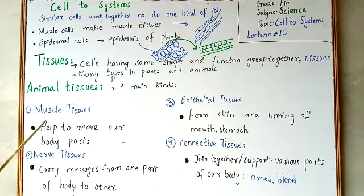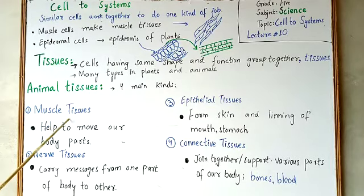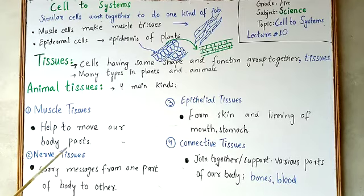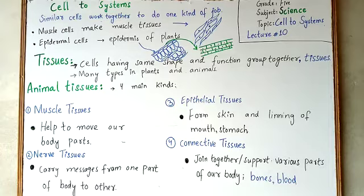Muscle cells combine together to form muscle tissues. Muscle tissues help to move our body parts. These muscle tissues are attached to our bones and help them to move our body parts, like when we want to raise our hand or walk — all these muscle tissues help us to move.